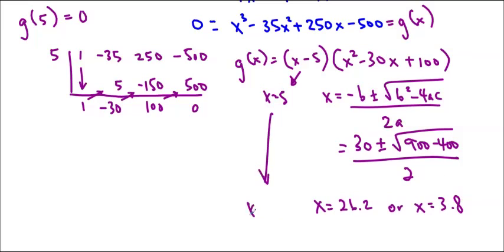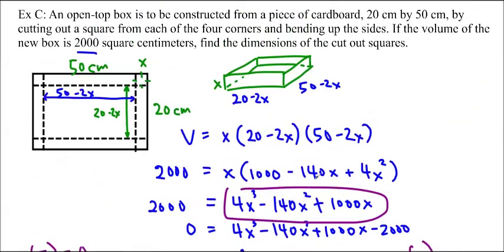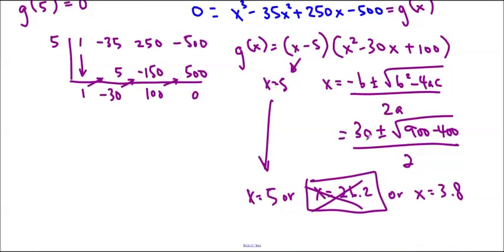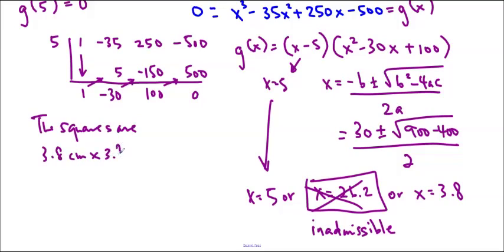So that ends up being the answer. And, of course, x equals 5 as well. Now, it looks like we have three answers because we don't have anything negative. However, we do need to worry about this 26.2. It ends up being inadmissible. Why? Well, because if I wanted to cut out a square that was 26.2 centimeters long, that's longer than my actual size. So that's kind of impossible, of course. So we're going to deem 26.2 inadmissible. And write our answer. So the squares are 3.8 centimeters by 3.8 centimeters, or 5 centimeters by 5 centimeters. And that's it.